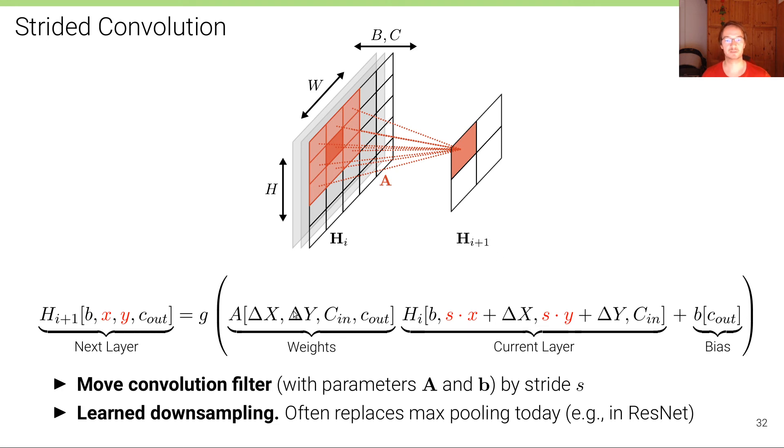Still, we have the same parameters a and b for the weights and bias as before for the regular convolutional layer. This is a form of learned downsampling, in contrast to max or mean pooling which does not have any parameters and is not learned. It's used in many modern network architectures such as ResNet.